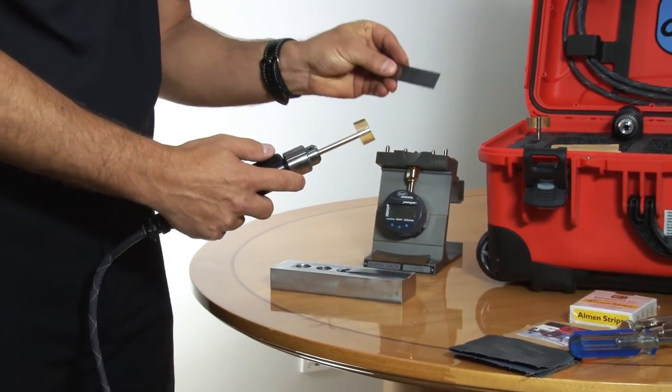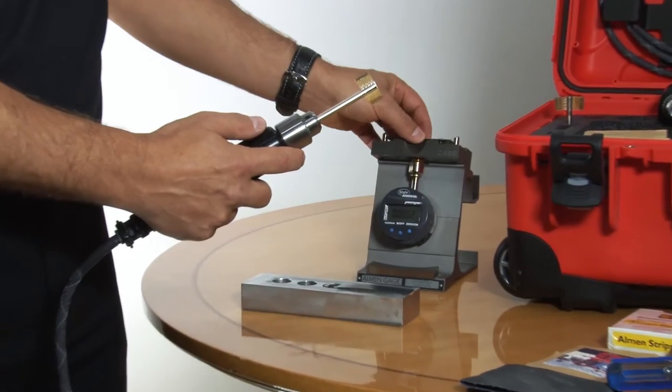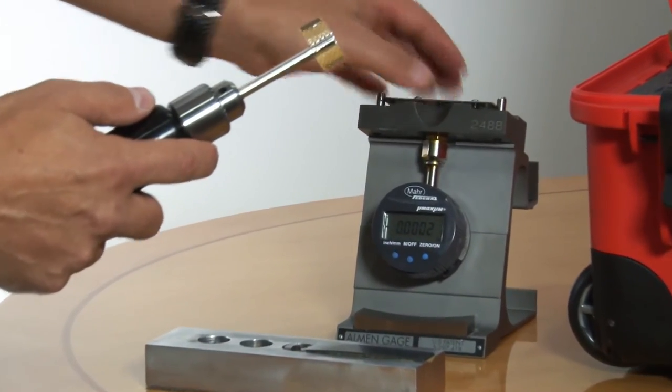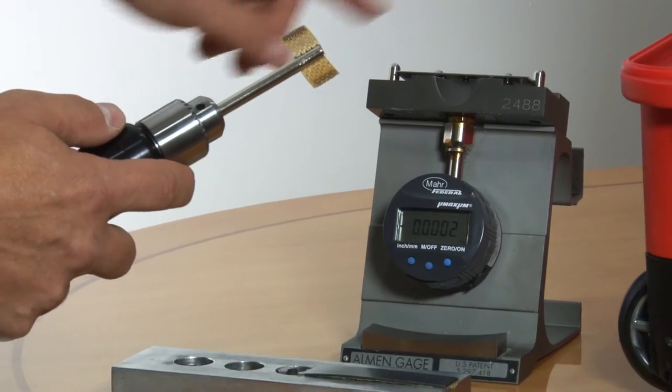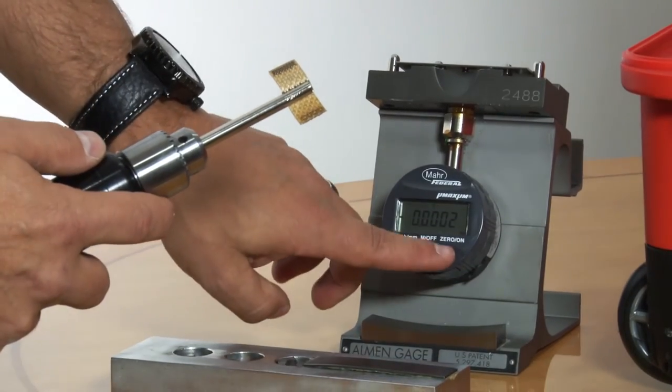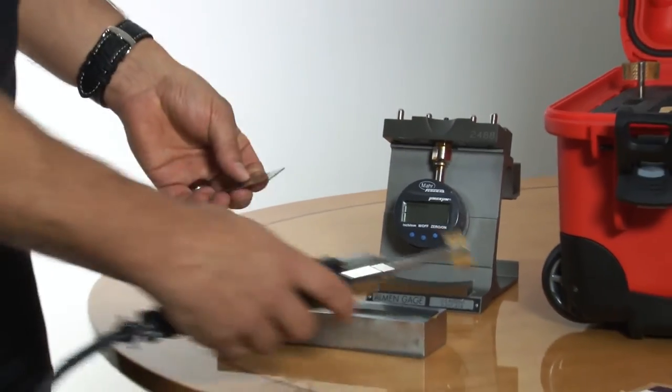The next step, you take a new almond strip and install it on the almond gauge. Make sure it's solidly placed, and this is the initial archite on this almond strip. We zero the gauge specifically for this almond strip.